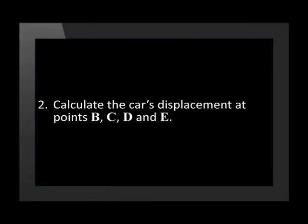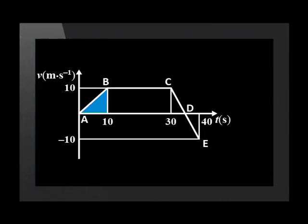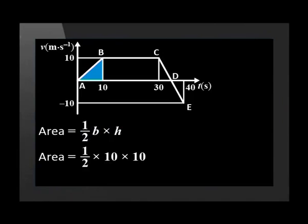Now look at part 2 of this question: calculate the car's displacement at points B, C, D, and E. In order to work out displacement from a velocity versus time graph, we use the area under the graph. The displacement from A to B is calculated from the area of a triangle. The area of a triangle equals half base times height, so in this case the area equals a half multiplied by 10 by 10. The displacement at point B is 50 meters.